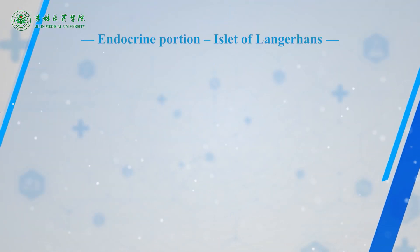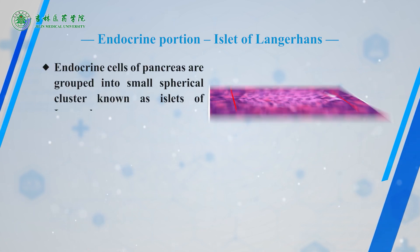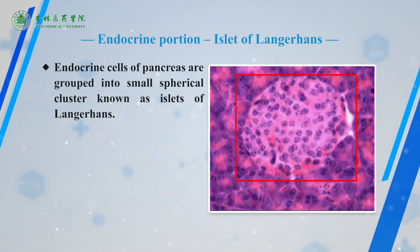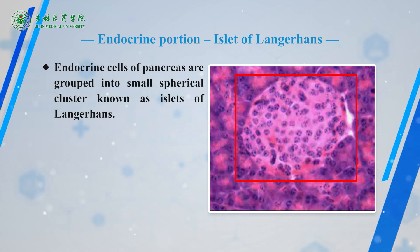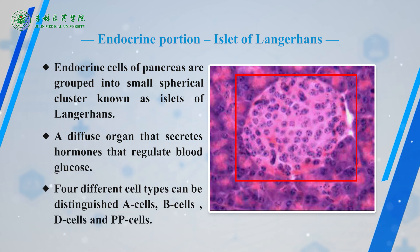Now let's learn about the endocrine portion: the islets of Langerhans. Endocrine cells of the pancreas are grouped into small spherical clusters known as islets of Langerhans, which secrete hormones to regulate blood glucose.